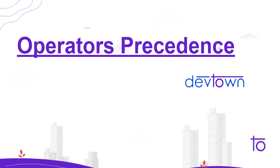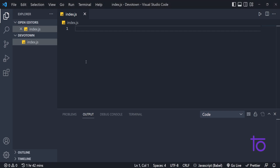Hello guys, how are you? I hope you're doing well. My name is Vikrant and welcome back to Dev Town. In this video we are going to be talking about operator precedence — basically what precedence means: the order in which our operators are being executed, the order of execution of statements. Right now I am on my VS Code.